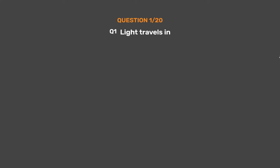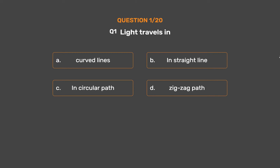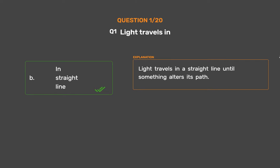Question number 1. Light travels in: option A, curved lines; option B, in straight line; option C, in circular path; option D, zigzag path. The correct answer is option B, in straight line. Light travels in a straight line until something alters its path.